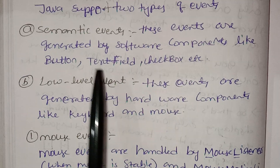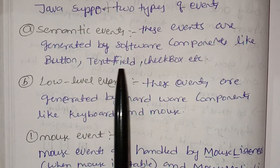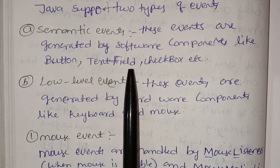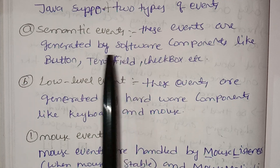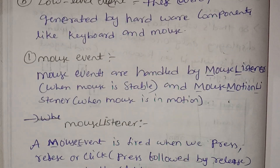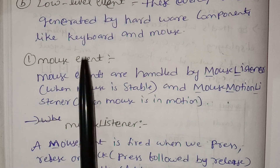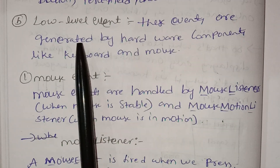Semantic events are generated by buttons, text fields, and GUI components. Then we have low-level events.